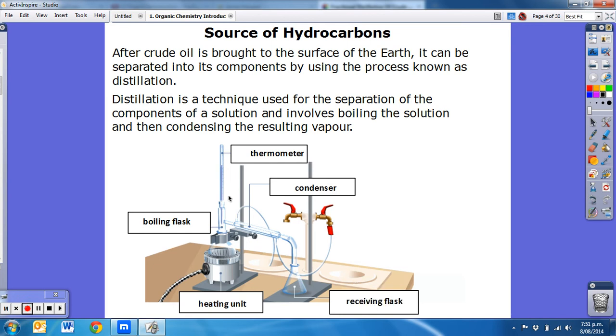When the temperature changes in the thermometer, then we know to remove this receiving flask and replace it with a new one. Because when we get a gas forming at a different temperature, that's a different liquid that is being condensed in the condenser.